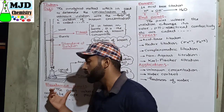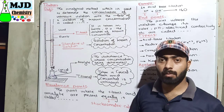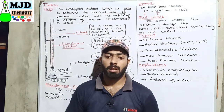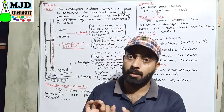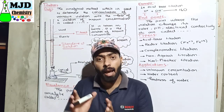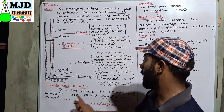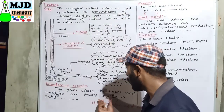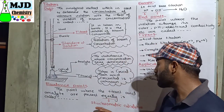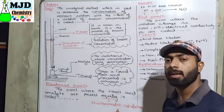The next term used in titration is equivalence point. What is the equivalence point? It is the point where titrate and analyte are present equally — that is, in stoichiometric amounts. When the concentration of titrate and analyte become stoichiometrically equal, that point is known as the equivalence point.